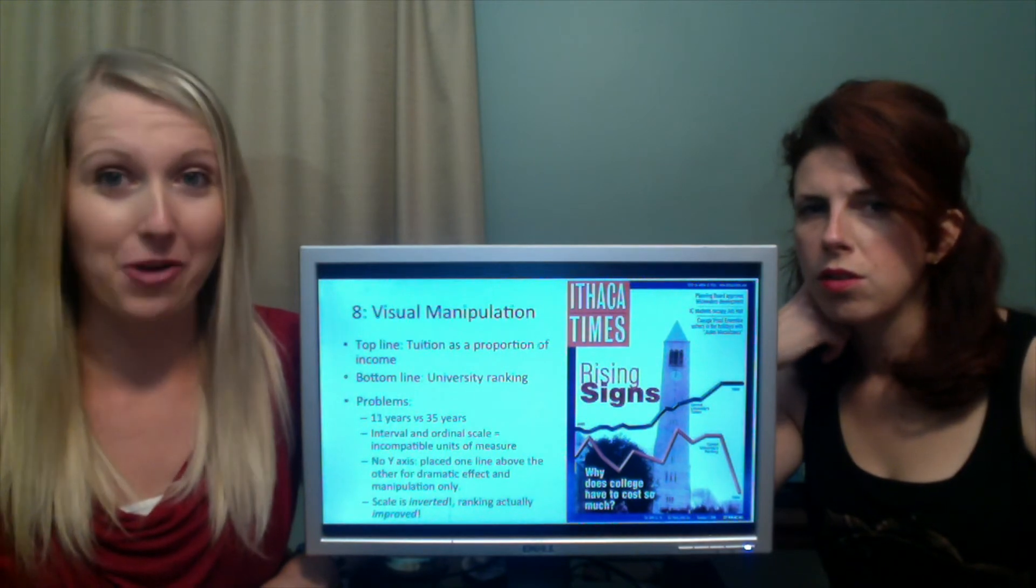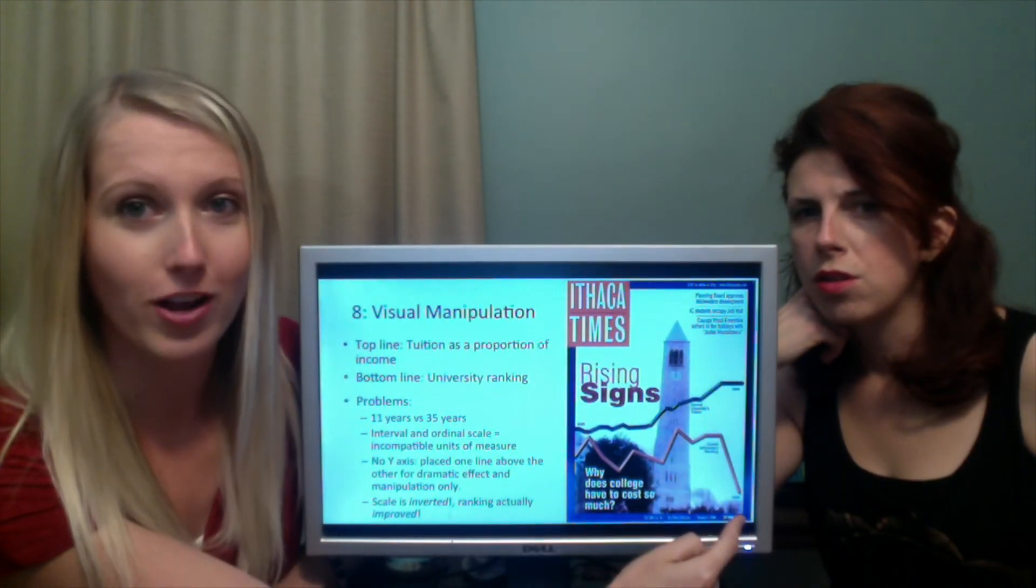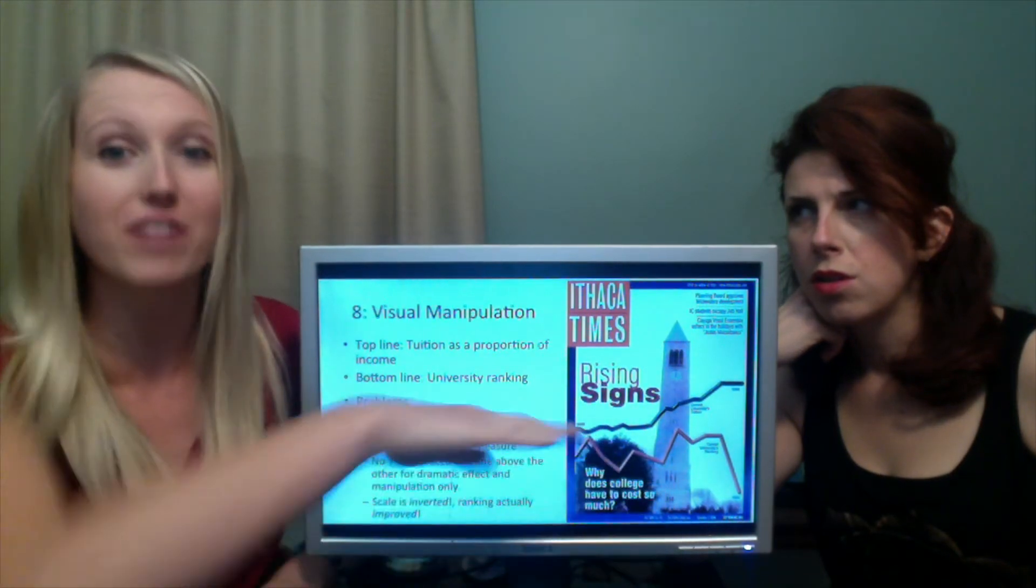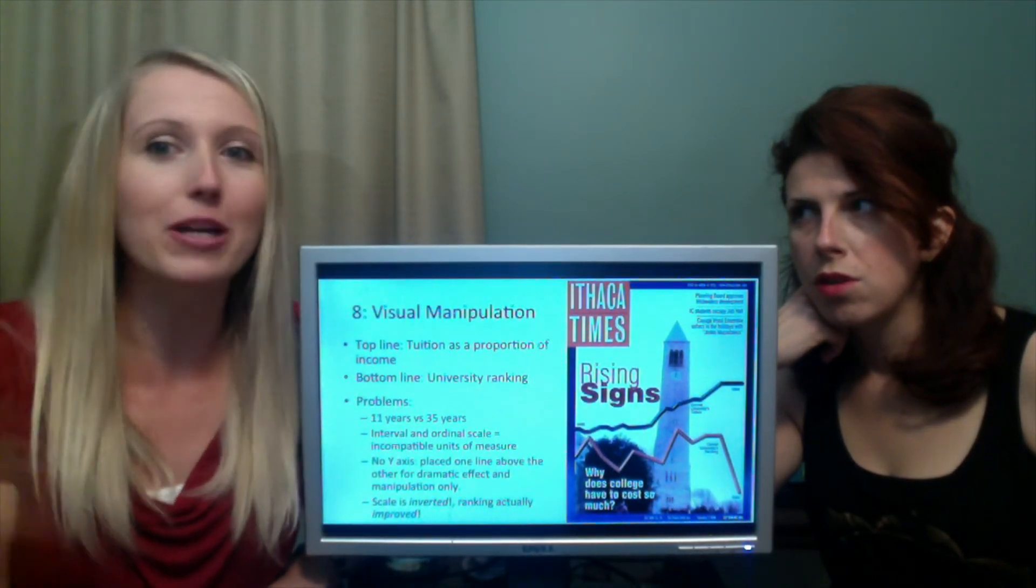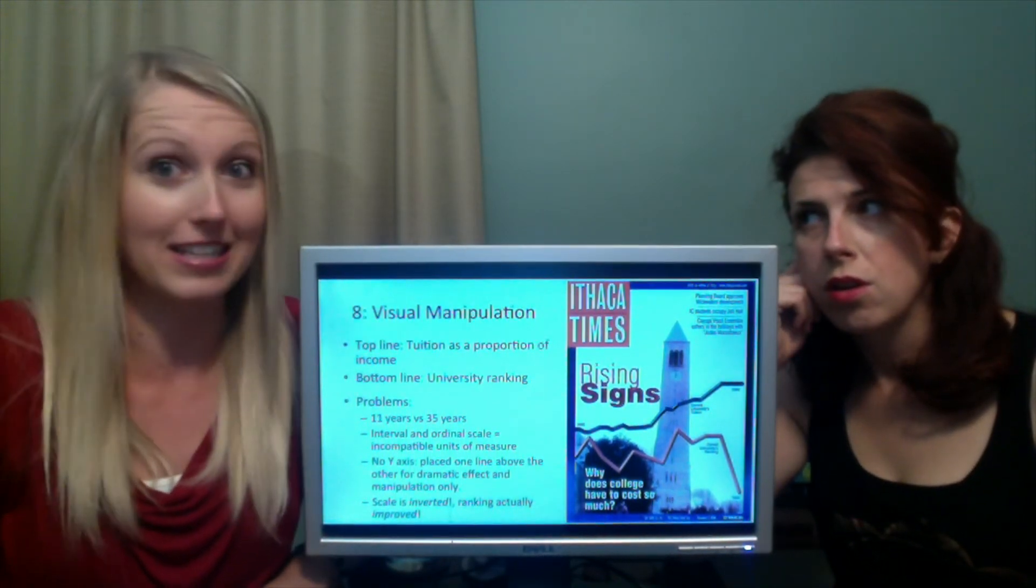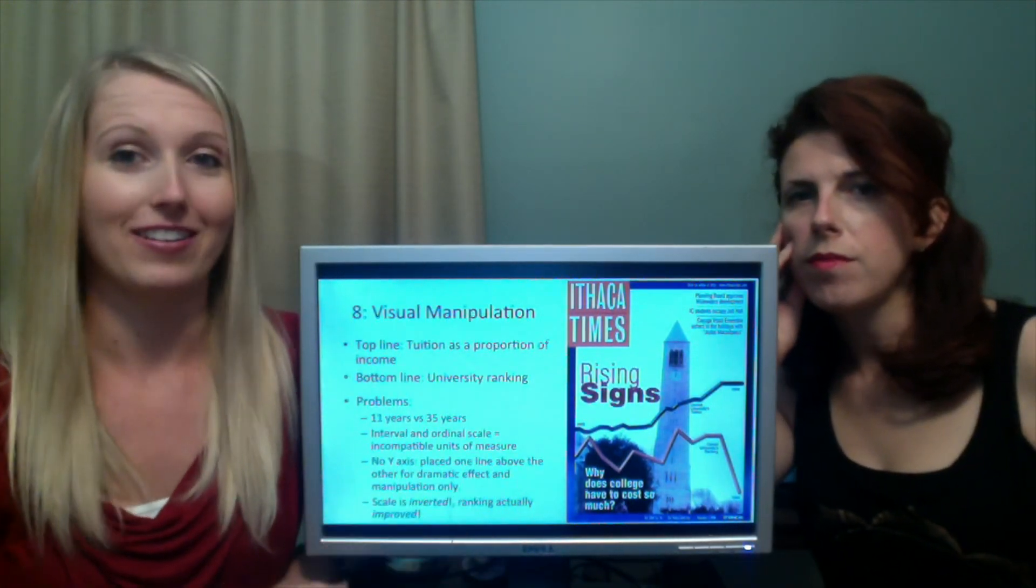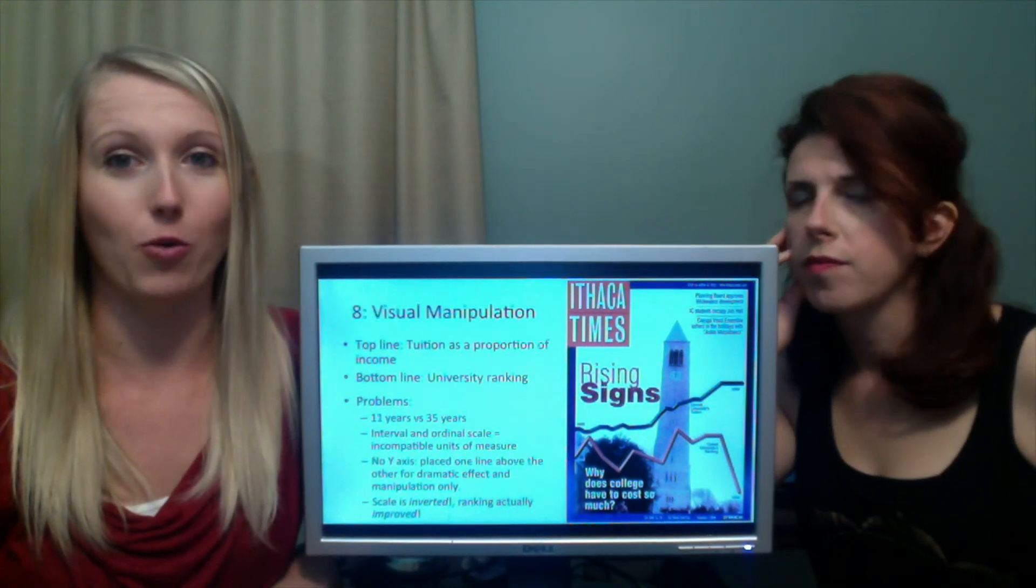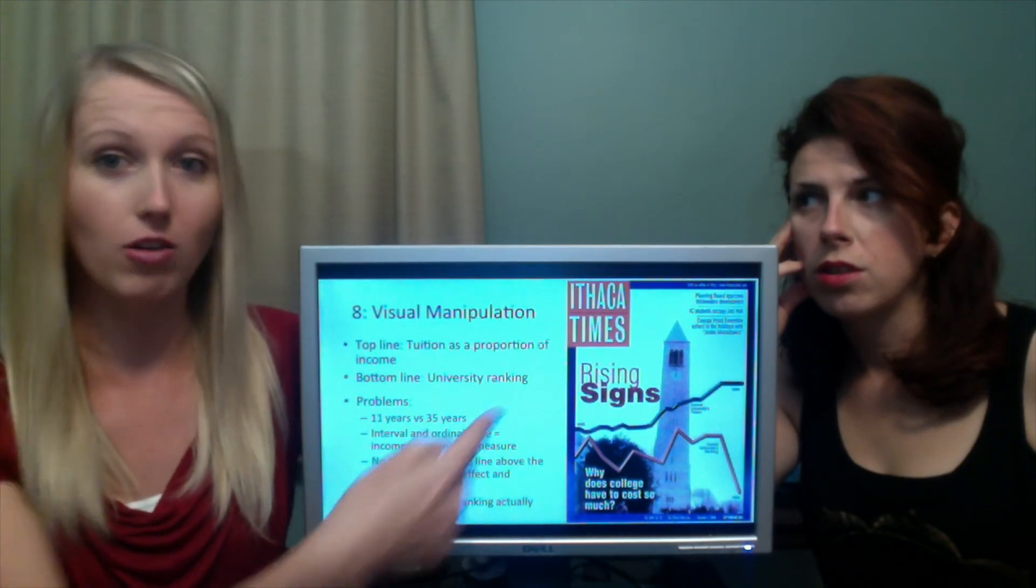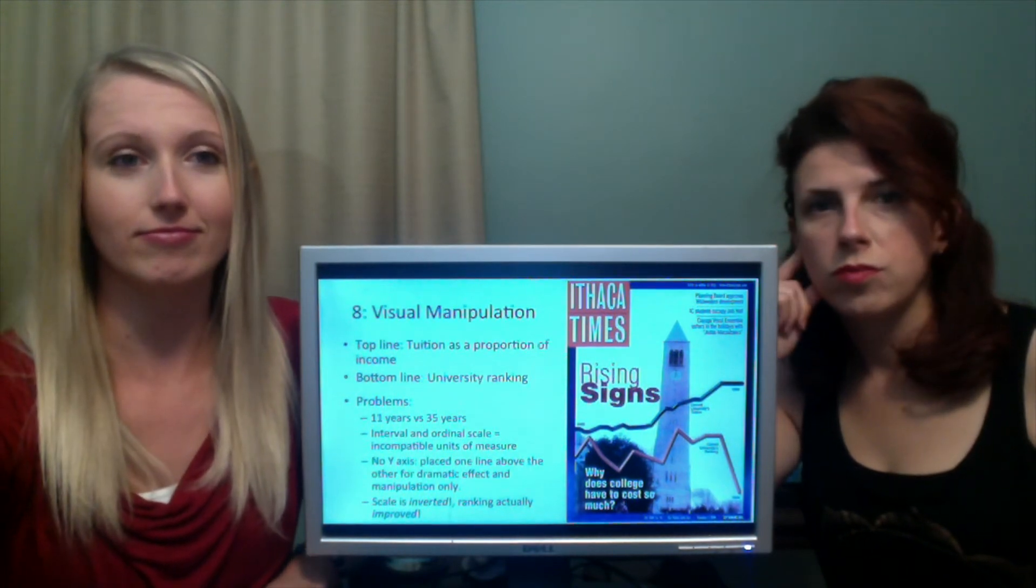And the worst problem, this scale is inverted. It's upside down. They literally took this ranking. In 1999, there was not a drop in Cornell University's ranking. It actually increased. They literally took this scale and flipped it upside down. But they can do that because there's no labels. There's nothing here. They're just lines. They didn't mislabel it. They just didn't label it. So this has got to be the worst scam using statistics. Be careful when you're reading graphs. Make sure you read the actual numbers and you're paying attention.